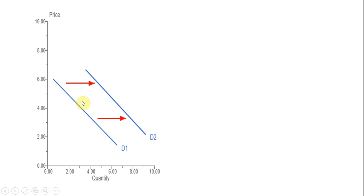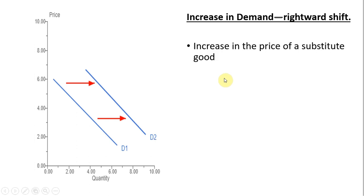Here's a review of things that can cause the demand curve to shift to the right or increase. An increase in the price of a substitute good causes the demand curve to shift right. A decrease in the price of a complement good causes a demand curve to shift right or increase.